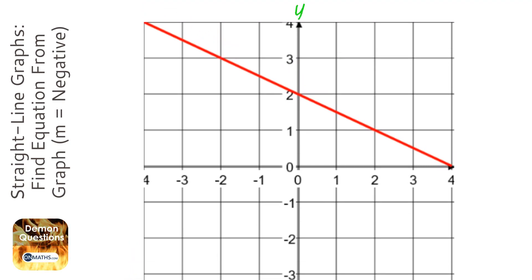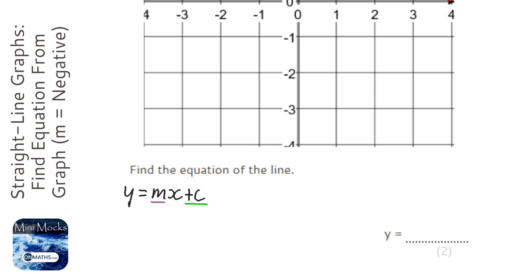You just go to the y-axis and you keep going down until you get to where the line crosses it, which is at 2. So we know we've got y equals mx plus 2. Now the gradient's a little bit more complicated.